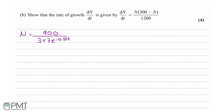We are going to rewrite n without the fraction components. So n equals 900 times (3 plus 7e to the minus 0.25t) all to the power of minus 1.